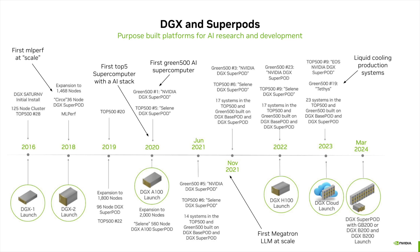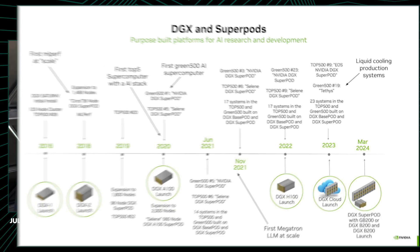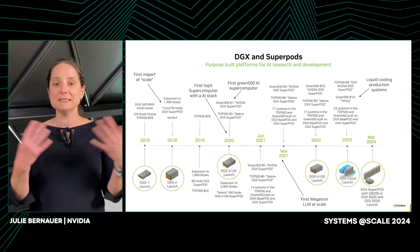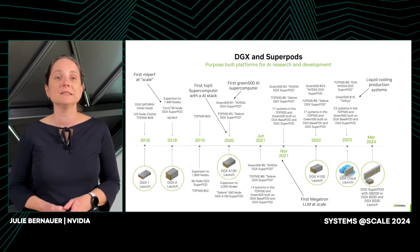As I go through the timeline, you'll see a certain set of very important milestones. The first one is in 2018, where we did the first MLPerf benchmark for a large set of AI workloads at scale. Two years later, we kept on building those platforms and had the first top-five supercomputer — a top-500 HPC benchmark — but this supercomputer ran an AI stack.